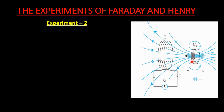Here also, the coil connected to the battery is moved towards and away from coil C1. At that time, the galvanometer showed deflection, indicating that current is developed in coil C1. Similarly, when coil C1 is moved towards and away from fixed coil C2, the galvanometer also showed deflection. When both coils are fixed, the galvanometer showed no deflection, indicating no current is developed in coil C1. The faster you move the coil, the more current is generated; the slower the movement, the less current is generated.